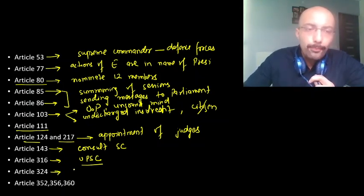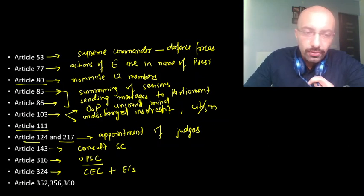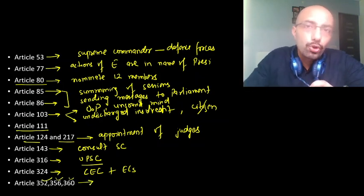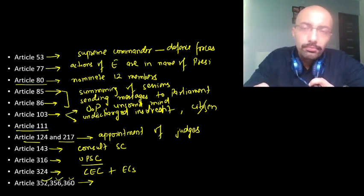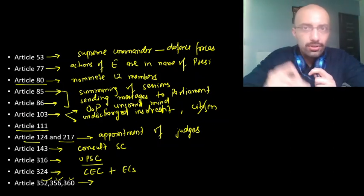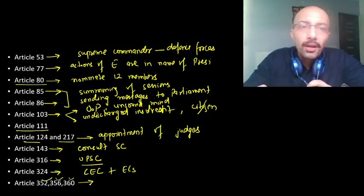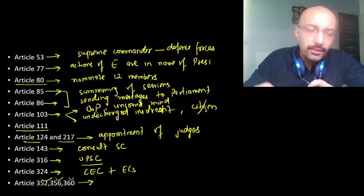Similarly, Article 324 covers the appointment of the Chief Election Commissioner and other election commissioners. Finally, Articles 352, 356, and 360 empower the President to proclaim three types of emergencies: National Emergency, President's Rule (also called Constitutional Emergency), and Financial Emergency. These are some — not all — of the articles where the President has scope for acting in his individual judgment. These questions were left unanswered by our Constitution makers.